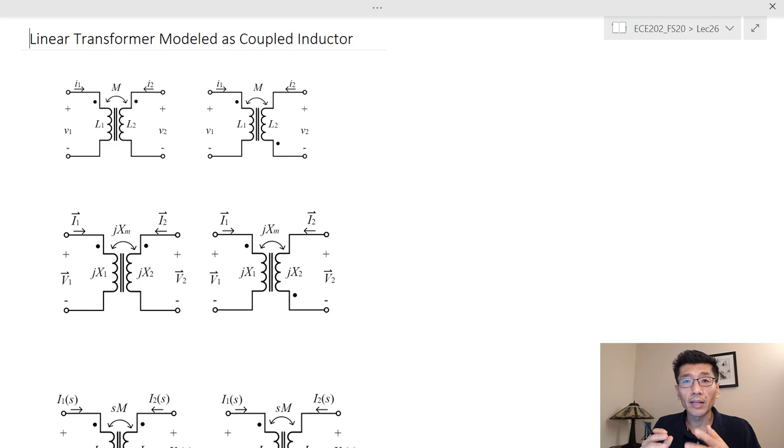In the linear transformer we kind of relax those assumptions by a little bit. We included two kinds of non-idealities here. One is we allow the leakage so we don't assume perfect coupling and two is we don't assume the infinite permeability of the magnetic core.